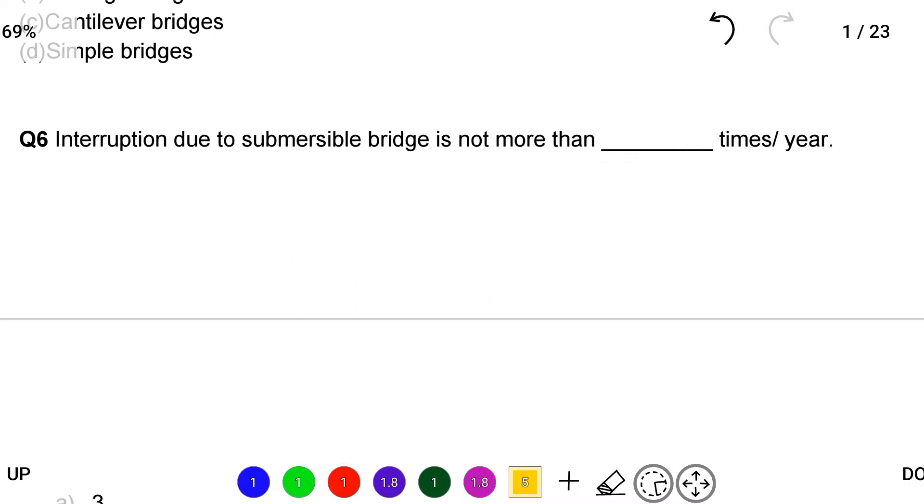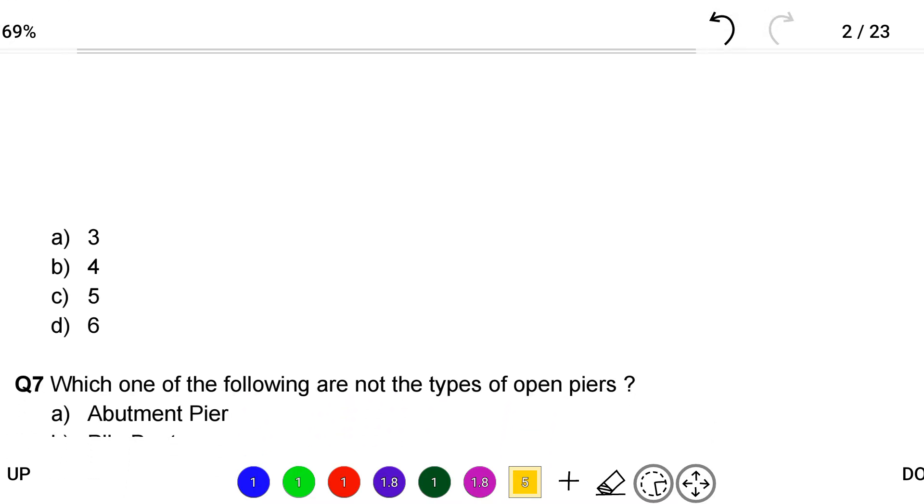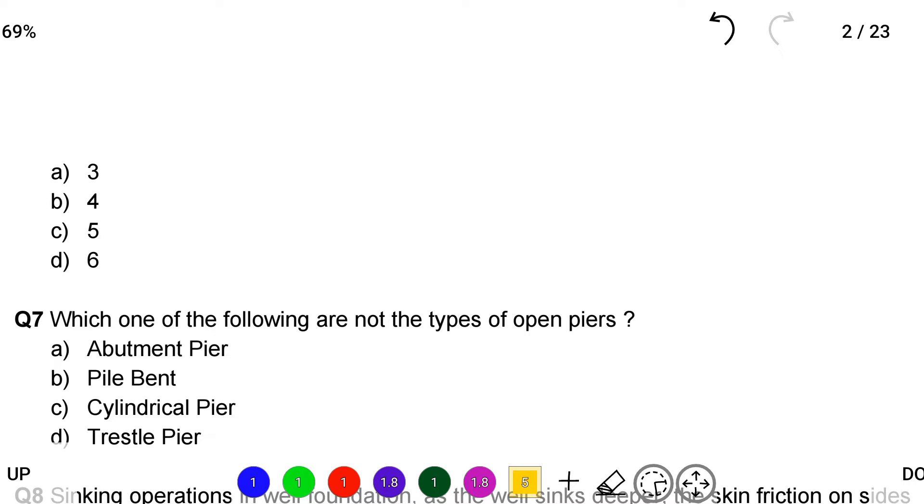Next question: interruption due to the submersible bridge is not more than blank times per year. Option A 3, option B 4, option C 5, option D 6. So the correct answer is option D 6.